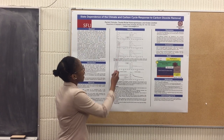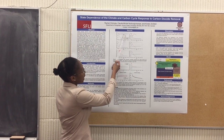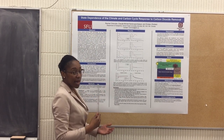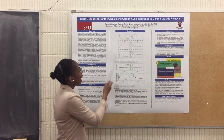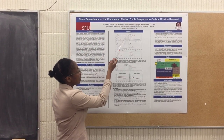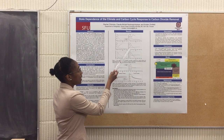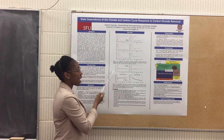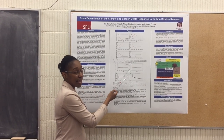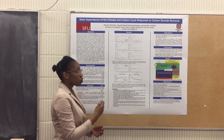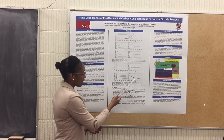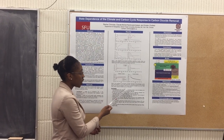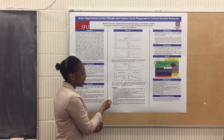Our results section shows the equilibrium simulation response in blue and the transient simulation response in red for various climate and carbon cycle variables, including atmospheric carbon dioxide, surface air temperature, ocean carbon, land carbon, vegetation carbon, soil carbon, as well as the air-to-land carbon flux and the air-to-ocean carbon flux. We also show the equilibrium and transient simulation responses for NPP (net primary productivity), soil respiration, and the leaf litter flux.